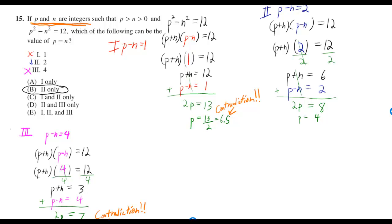Well, if p minus n is equal to 1, then I can take p minus n in this line right here and replace it with 1 so I get this line right there. But then that simplifies to the line right below because p plus n times 1 is just p plus n. So I have p plus n is equal to 12.